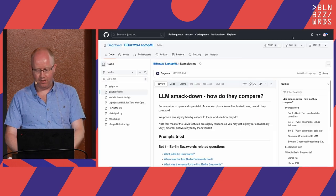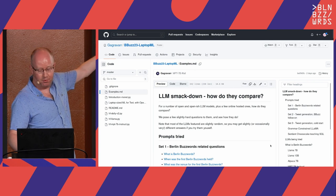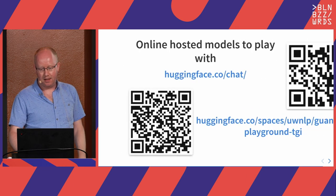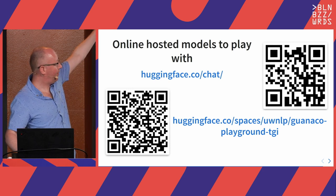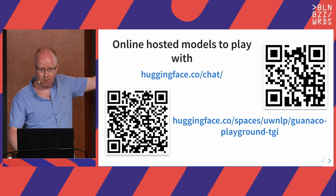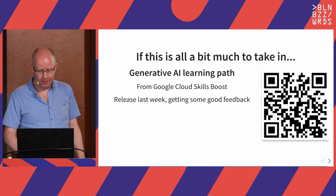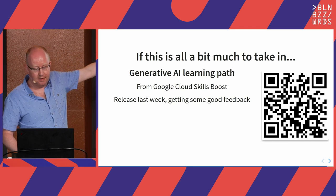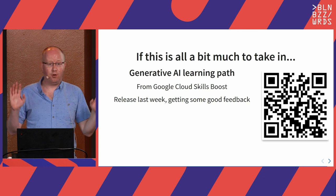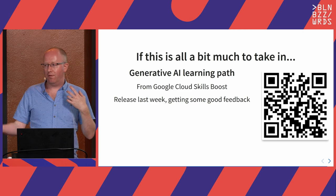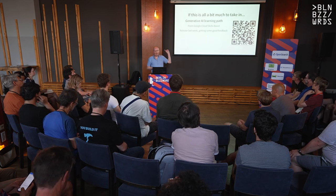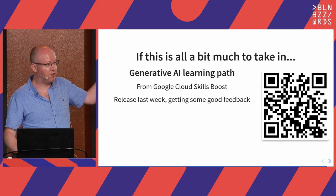Comparisons between LLMs are on the GitHub — I've got examples from all the different LLMs asking questions. Some do well, some do badly. If you want to try without installing anything, Hugging Face has their chat and the Guanaco playground — it's a bit like OpenAI's ChatGPT, only free and you're not giving evil people your data. Last week Google released their Generative AI Learning Path, a series of guides to how all this fits together. If there's anyone in your organization that wants to get started, it's getting great feedback.